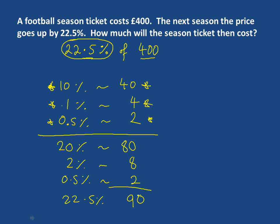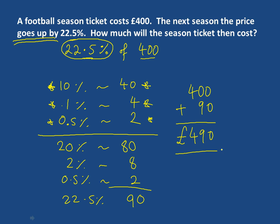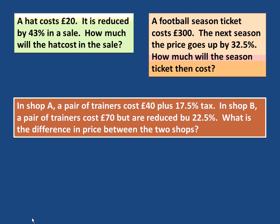So the question says the football ticket goes up — it increases. So we start with our 400 and we add on the 90, which gives us our answer of £490. So the next season, the season ticket costs £490. Right, that's going through the basic percentage questions without using a calculator. Have a go at the questions on this slide and see how you get on. Good luck.